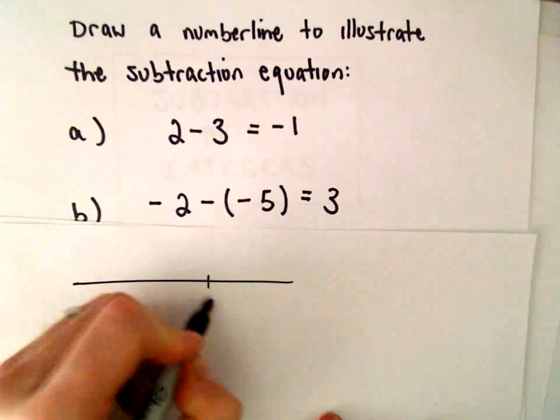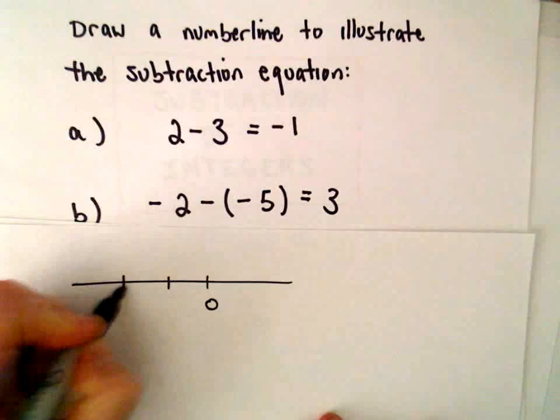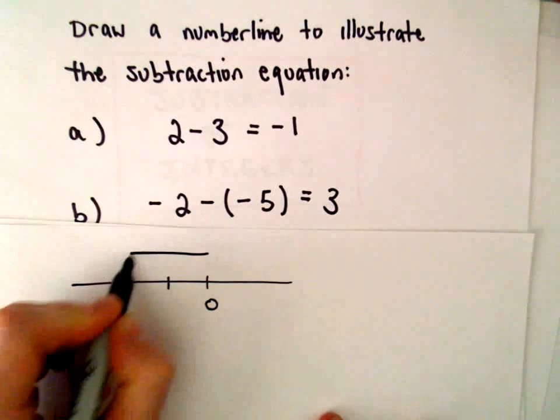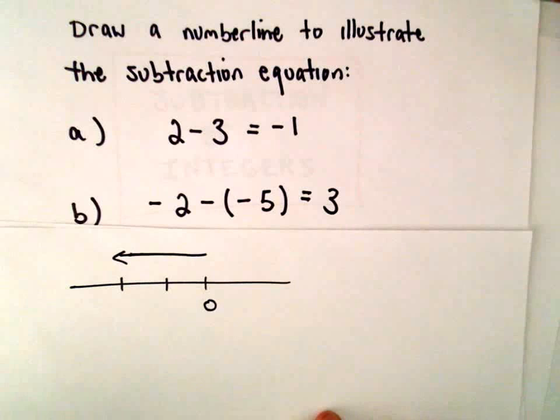So the first thing I'm going to do is negative 2. So that's going to move us 2 units to the left. So there's our 2 units to the left.